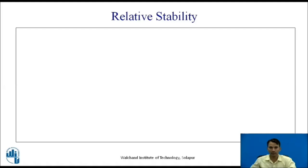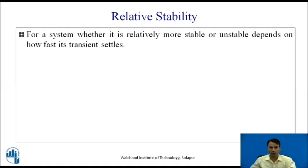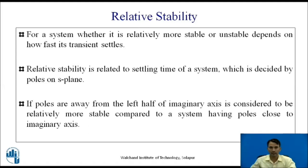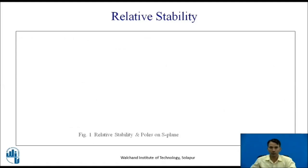For a system, whether it is relatively more stable or unstable depends on how fast its transient settles. Relative stability is related to the settling time of a system, which is decided by poles on the S-plane. If poles are away from the left half of the imaginary axis, the system is considered to be relatively more stable compared to a system having poles close to the imaginary axis. Let us observe relative stability using poles on the S-plane.